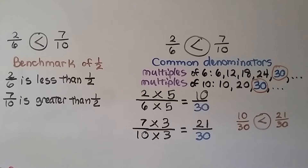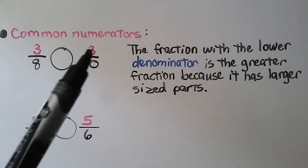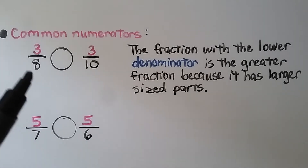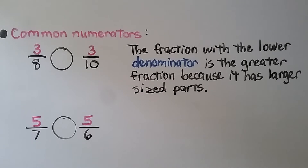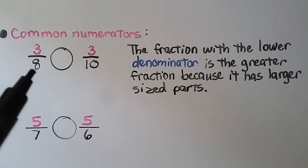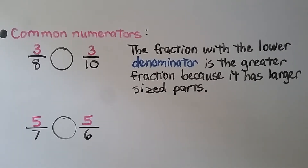We were able to compare the same fractions using either benchmarks or common denominators. When we have common numerators, the fraction with the lower denominator is the greater fraction because it has larger sized parts. They both have three for a numerator. Eight is less than ten, so three-eighths must have larger parts — that's the greater fraction. Three-eighths is greater than three-tenths.